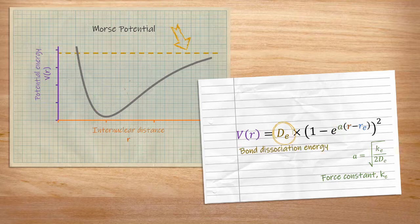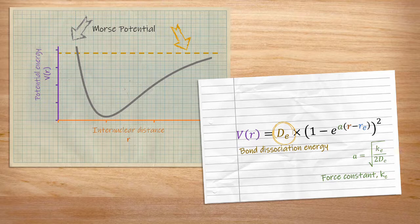The DE term is the dissociation energy for the bond, the energy required to fully dissociate both atoms. Closer to zero distance, this curve increases dramatically, much more so when the force constant is high compared to the dissociation energy.